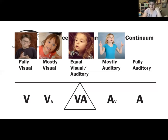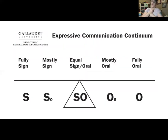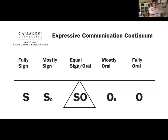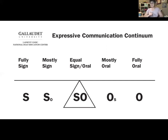So that was all receptive — how the child is receiving language. Now we're going to look at the Expressive Communication Continuum. Just like receptive, on one end we have a person who is fully committed to signing — all of their expression comes from their hands, body, and facial expression. The opposite end would be someone who is fully oral: they will not be signing to express themselves, only speaking. In the middle we have our simcommer again with a balance, and then you have people who are mostly oral with a little bit of sign, or mostly signing with a little bit of speech.